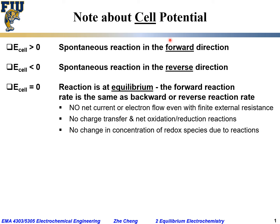To summarize: when cell potential is positive, the reaction proceeds spontaneously as written; when it's negative, the reverse reaction is spontaneous; when it's zero, the reaction is at equilibrium — connecting the two electrodes produces no current, no net reaction, and no change in concentration for any species.